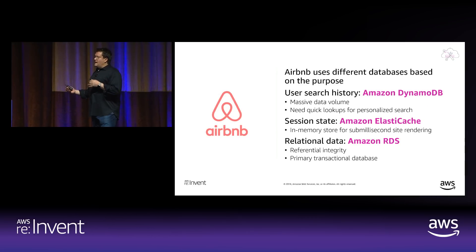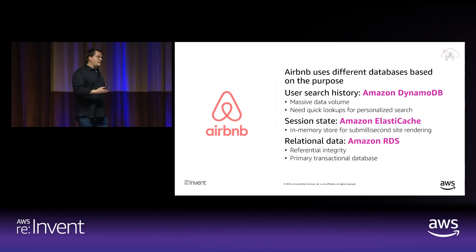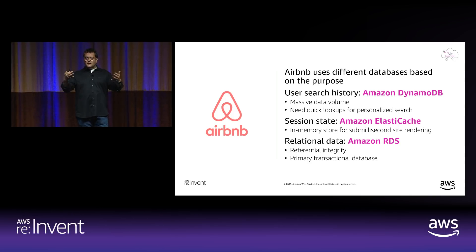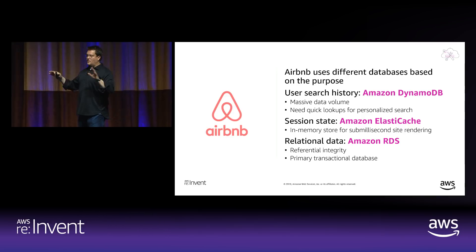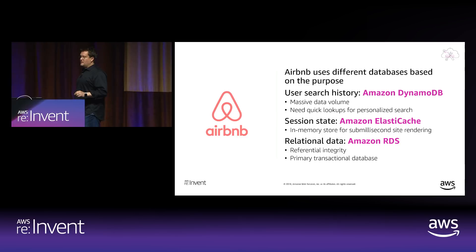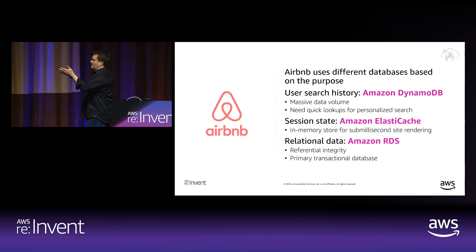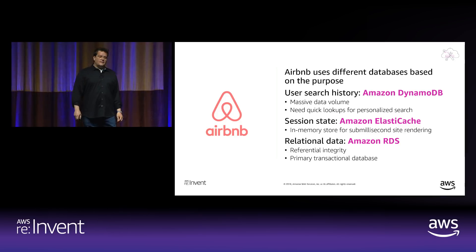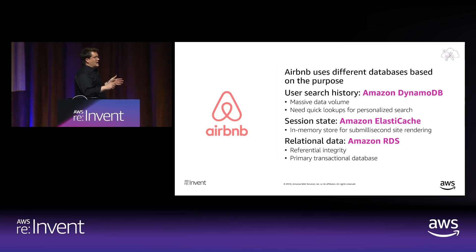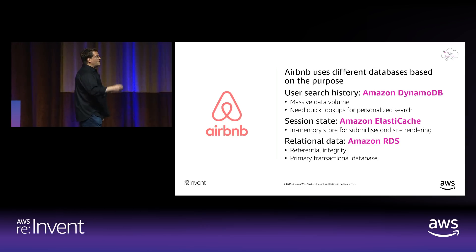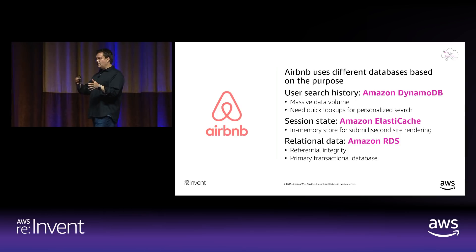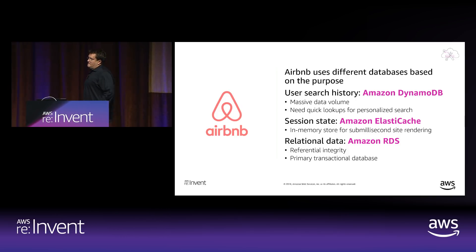Let's look at a couple of customer examples. Airbnb has an awesome engineering team. They break their application into smaller parts and absolutely pick the right tool for the right job. They use DynamoDB (key-value) for search history because they need super-fast lookups, ElastiCache for session state enabling sub-millisecond page rendering, and RDS for transactional data — such as when you're ready to hand over a credit card.